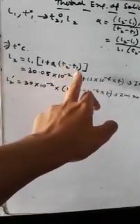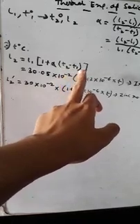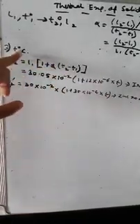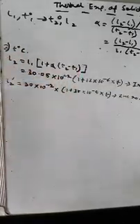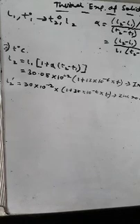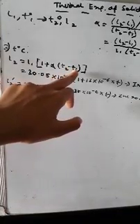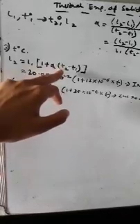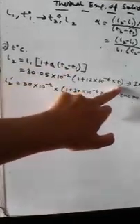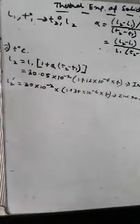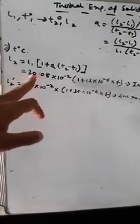Before moving to the calculation part, let me explain what will be the value of this T2 minus T1. This is the change in temperature or increased temperature. T2 that I've assumed as T, and T1's value is what? It's written in the first statement that both the rods are kept at 0 degree C. So T minus 0 is what? T. So students, we have written the data.